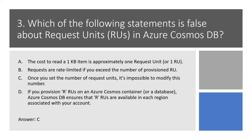Question 3. Which of the following statements is false about Request Units in Azure Cosmos Database? Option A: the cost to read a one kilobyte item is approximately one Request Unit. Option B: requests are rate limited if you exceed the number of provisioned RUs. Option C: once you set the number of Request Units, it's impossible to modify this number. Option D: if you provision RUs on an Azure Cosmos container, Azure Cosmos Database ensures that RUs are available in each region associated with your account.